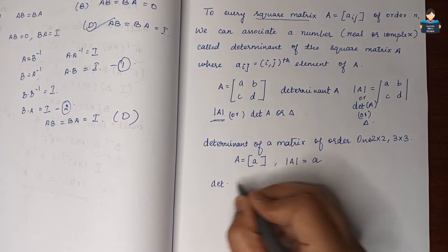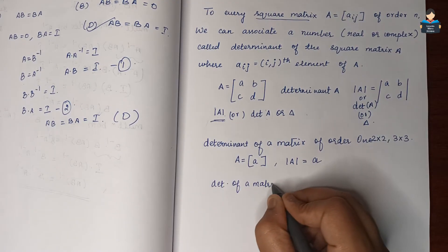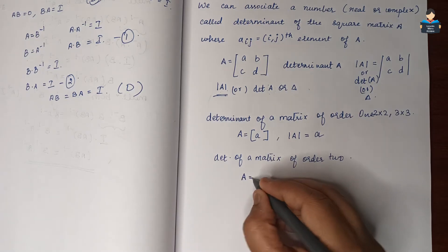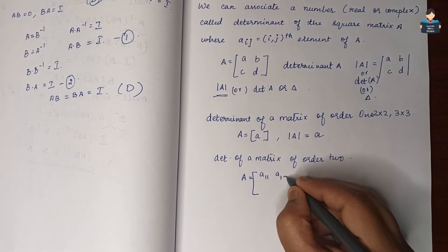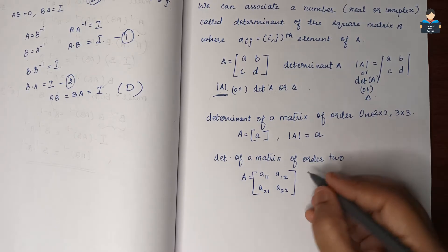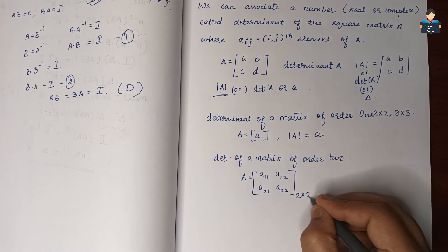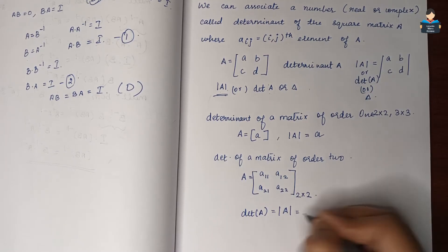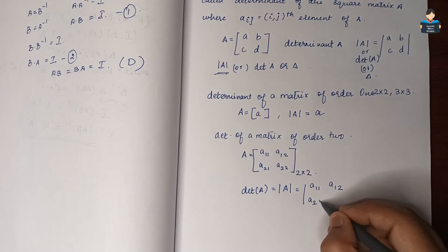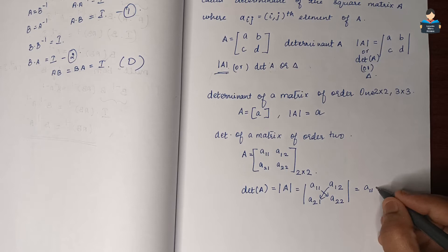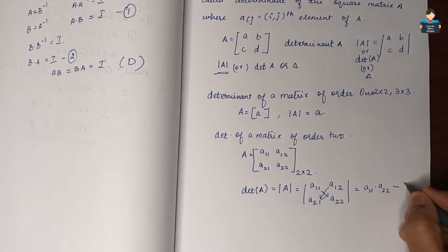Determinant of a matrix of order 2. Matrix A will be equal to: A11, A12, A21, A22. So the determinant of A will be equal to A11 into A22 minus A12 into A21.